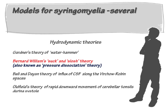Several theories on the pathogenesis of syringomyelia have been proposed over the last hundred years. These include inflammatory, degenerative, vascular, hydrodynamic, and so on. The prominent hydrodynamic theories of syringomyelia are those of Gardner, Bernard Williams, Ball and Dian, and Oldfield.